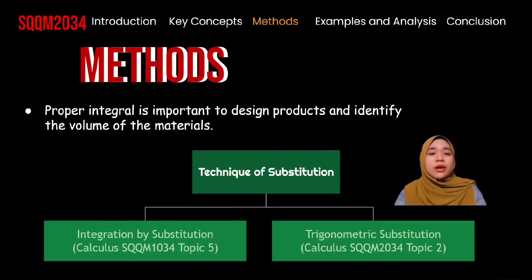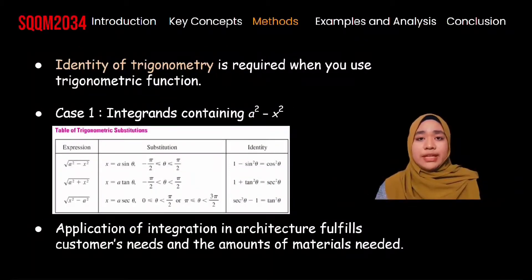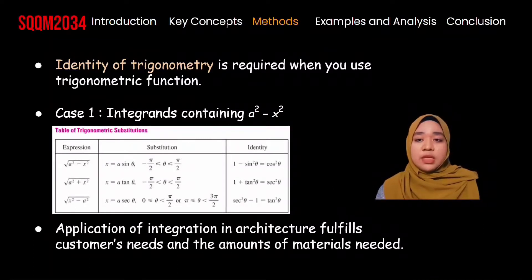For the method used in this assignment, proper integration is important to design products and identify the volume of material. There are two types of proper integral: the indefinite integral and the definite integral. We use the definite integral to find the volume and area under or between two curves. We also use two techniques of substitution: integration by substitution learned in Topic 5 in the first semester, and trigonometric substitution from Topic 2 in the current semester. The identity of trigonometry is a must when solving trigonometric functions — you need to choose the right identity and convert the trigonometric function given to solve the equation more easily and quickly. In some cases, the reduction formula is needed to solve more complicated equations. For trigonometric substitution, we have three kinds of cases with the specific identities shown in the slide.